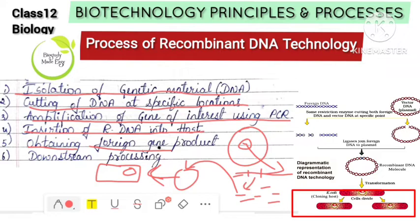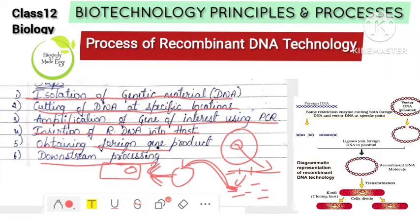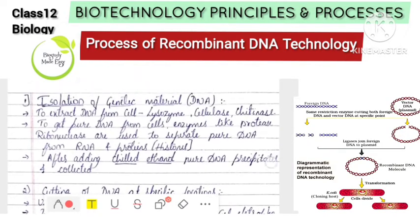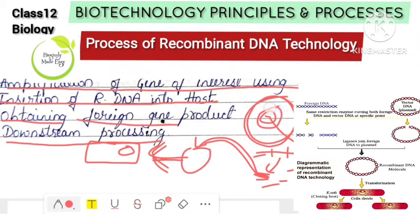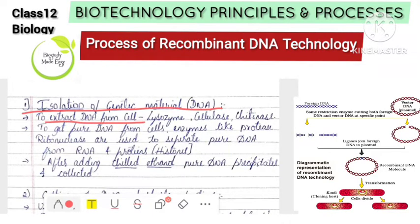Inside the host, the recombinant DNA multiplies and gives us the desired product. The foreign gene is expressed and proteins and enzymes are produced. The product is then processed and used as medicine or other desired output. This overall process describes downstream processing.